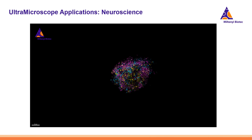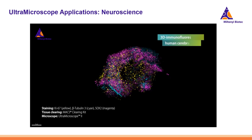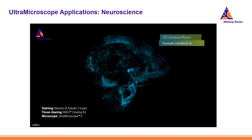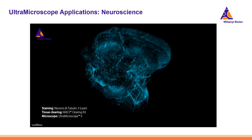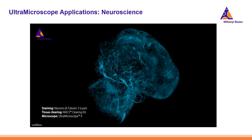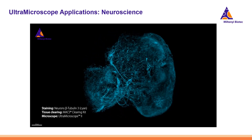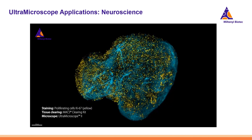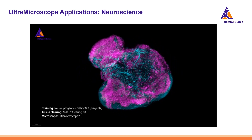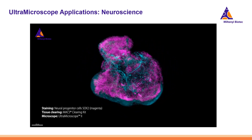Similarly, brain organoids can also be imaged using the Ultra Microscope and subjected to detailed analysis. Here, a human brain organoid is stained with antibodies and cleared with the MAX tissue clearing kit, then imaged with the Ultra Microscope. With 3D imaging, brain organoids can be studied in detail from various angles and depths, enabling detailed analysis and characterization of cellular structures and interactions within specific regions of interest.